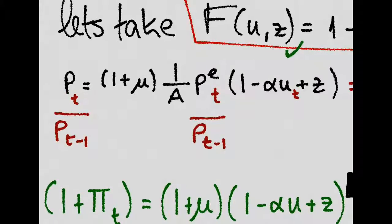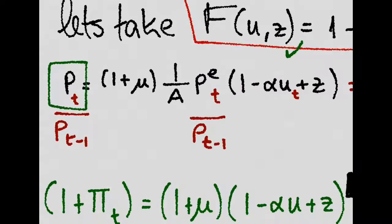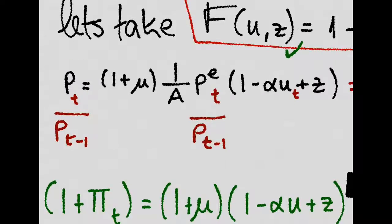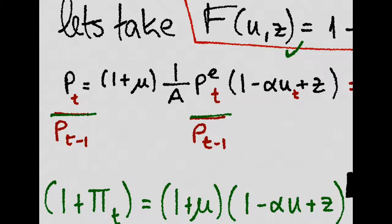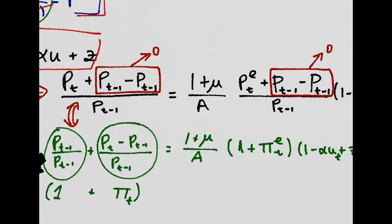Meaning for example that this is the price at period t. We divide both sides of the equation by price of t minus 1, and we use this trick.